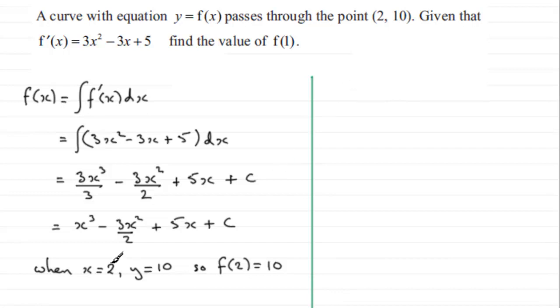So if we just continue down here, if we substitute these values into this equation, we've got 10 for f(2) equals 2³, and then we've got -3 times 2² over 2, and then +5 times 2 plus that constant C of integration.